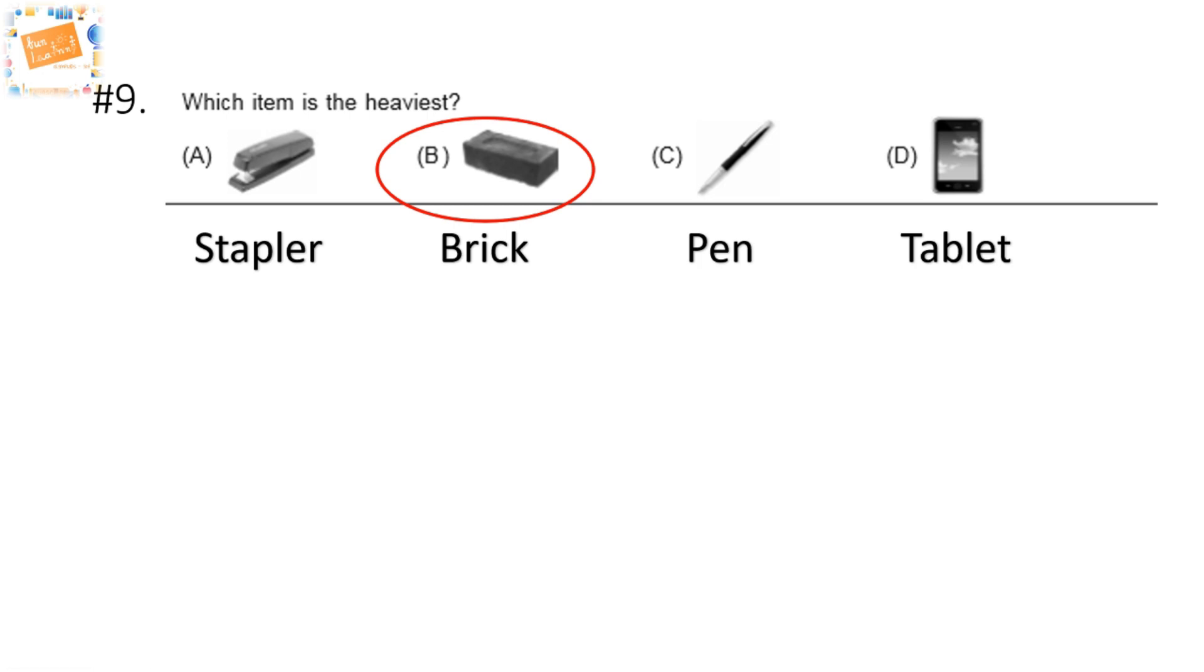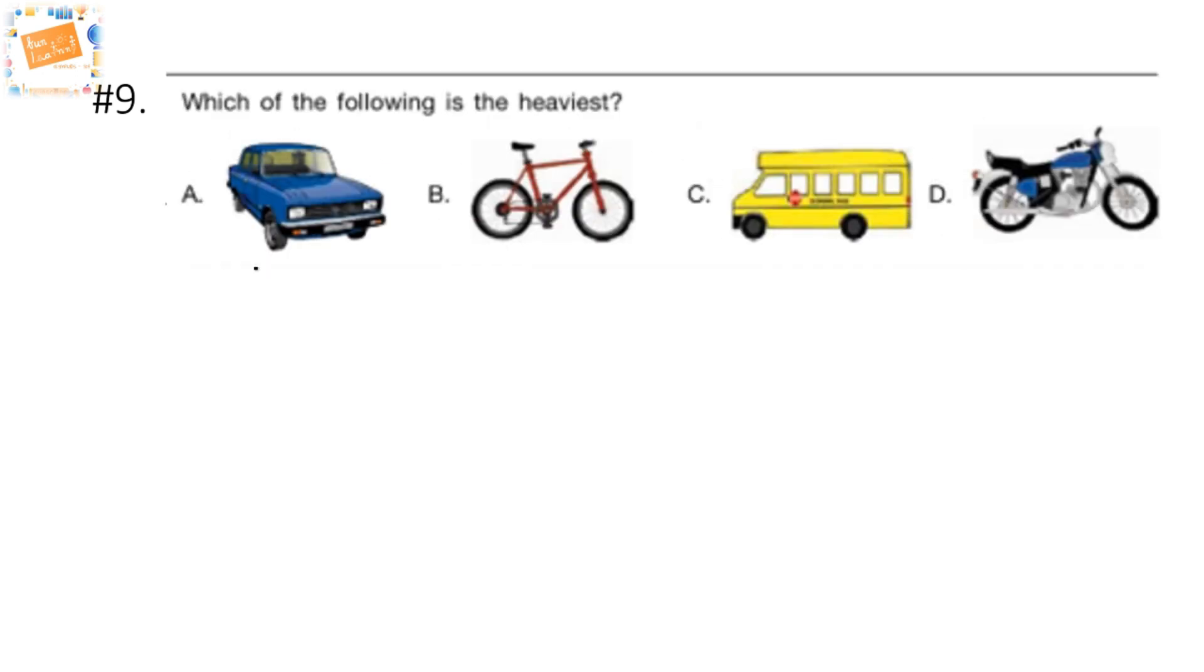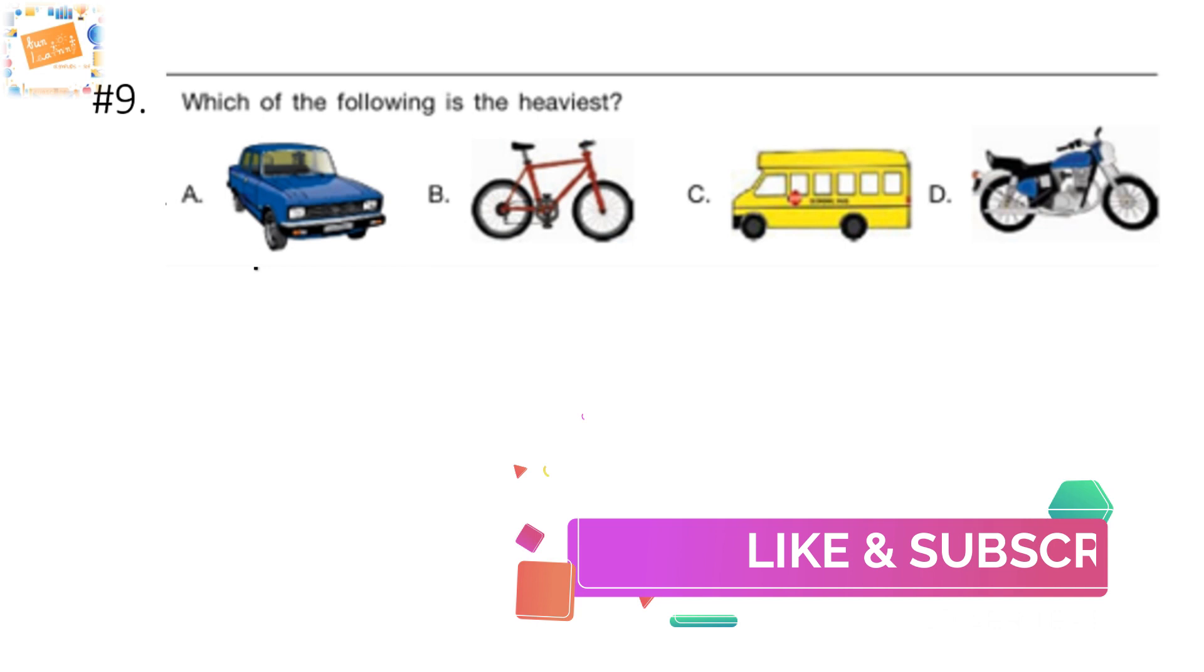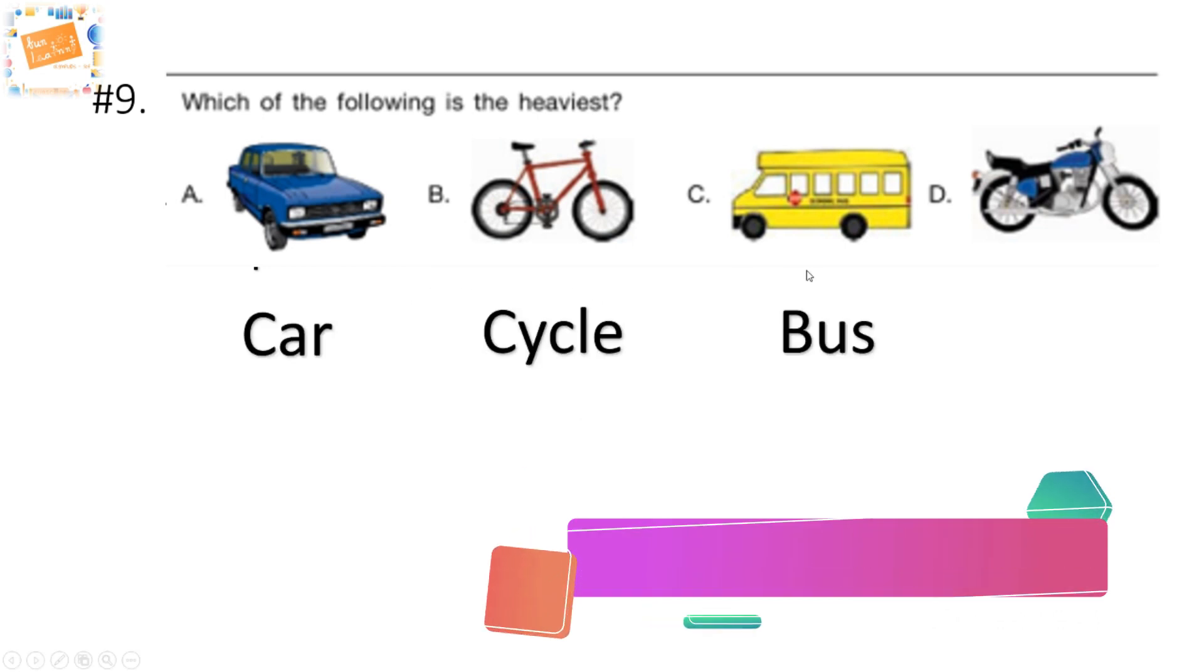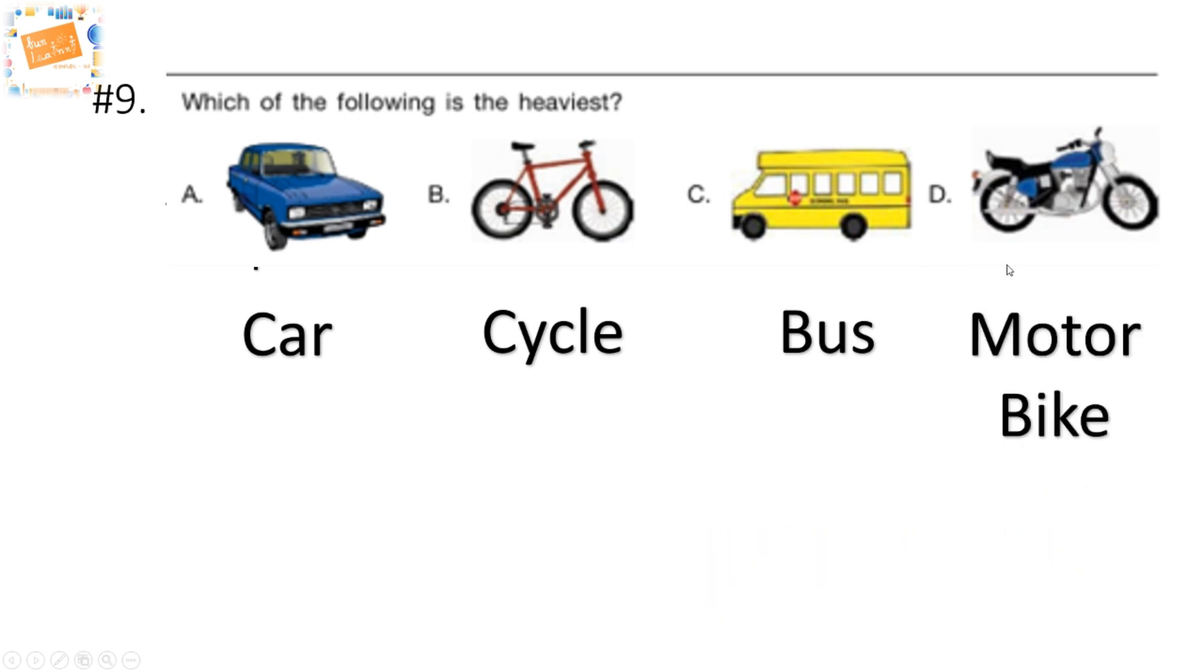Let's look at another such question: which of the following is the heaviest? Is it the car, is it the cycle, the bus, or the motorbike? Kids, here you should try to picture and notice the very simple rule that the one that is the biggest would be the heaviest. So of these, the biggest vehicle is the bus. So our answer is option C.